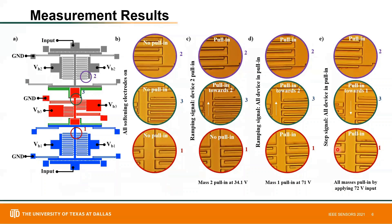Here we can see measurement results of a fabricated device. When bias voltage is applied to all softening electrodes, no device is in pull-in.